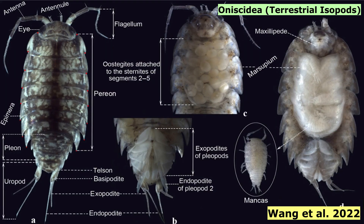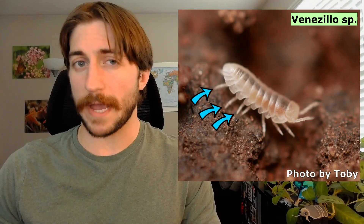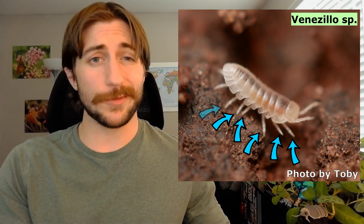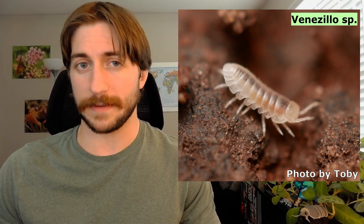With over 10,000 described species, isopods come in many shapes and sizes. As crustaceans, they all have two pairs of antennae, which can help separate them from other arthropods — though in some groups the second pair is heavily reduced and barely visible. Unlike other crustaceans, isopods have seven pairs of legs, which is one of the best ways to confirm an ID. There is one group, the Gnathiidae, that only has five pairs of walking legs.